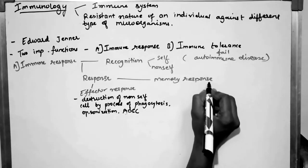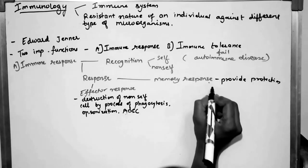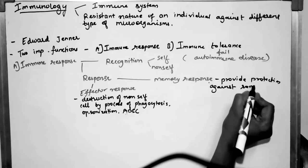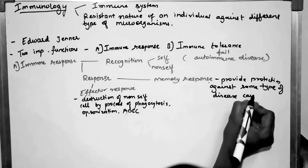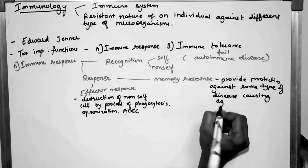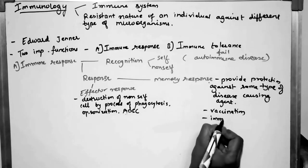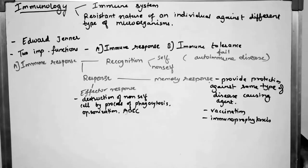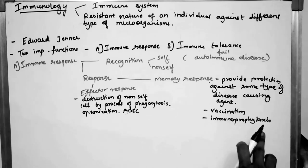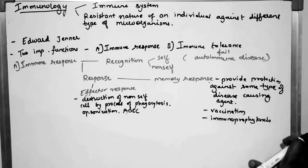Memory response provides protection against the same type of disease-causing agent. This protection can be given by vaccination or immunoprophylaxis. Vaccination means educating the immune system. Immunoprophylaxis means the production of active or passive immunity.